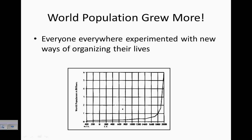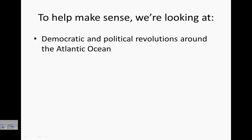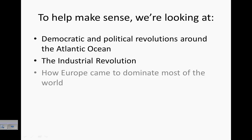Everyone everywhere experimented with new ways of organizing their lives, and these changes were pretty confusing. To help make sense of what we're looking at, we're going to break it down into three different parts: the democratic and political revolutions around the Atlantic Ocean, which I'm going to focus on today; the industrial revolution; and how Europe came to dominate most of the world. But the political revolutions are what we'll be focusing on tonight.